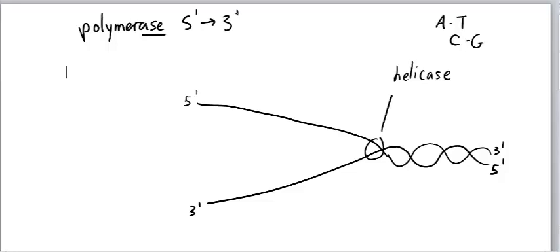And so you can see if both of these parent strands are going to base pair with nucleotides and make new daughter strands, you can see that it's a bit of a problem if polymerase only works in one direction. So I'll show you what I mean.